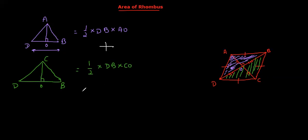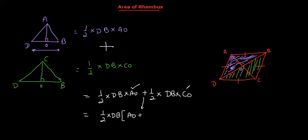What should I do quickly? I should half into D B into A O plus half into D B into C O. If you pay attention and if you have done algebra, I know we have done. Half D B. Half D B. Half D B is common. Can I take common half D B?